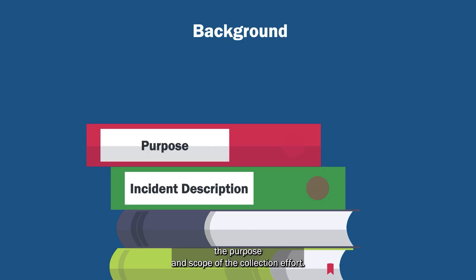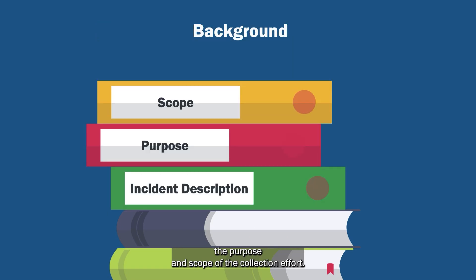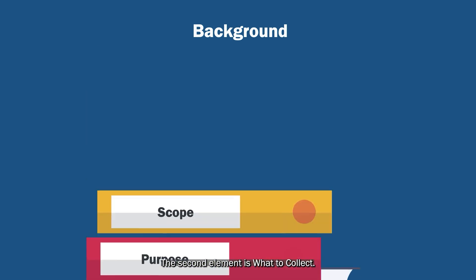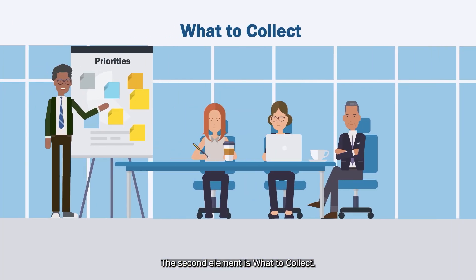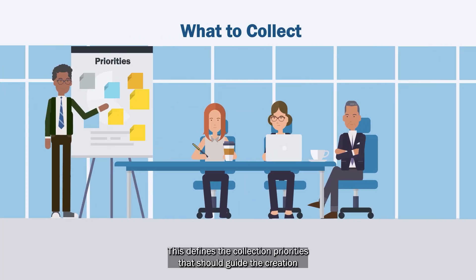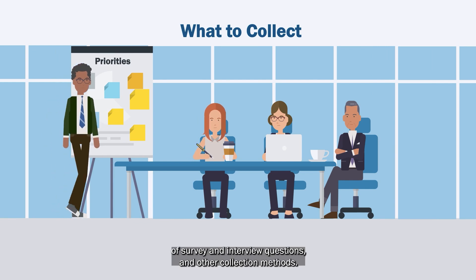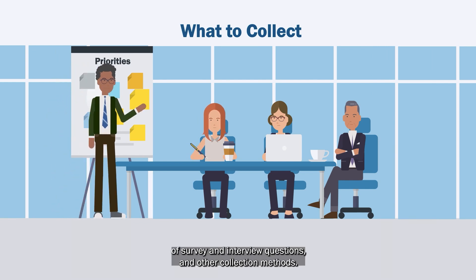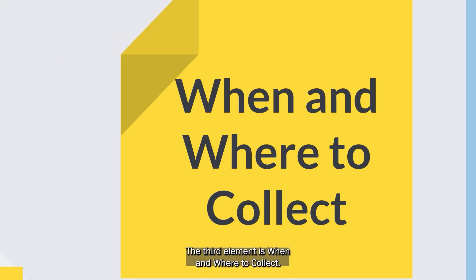The first element is the background, which briefly describes the incident and states the purpose and scope of the collection effort. The second element is what to collect, which defines the collection priorities that should guide the creation of survey and interview questions and other collection methods.